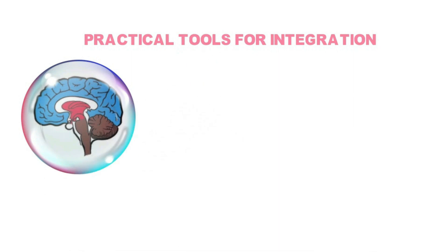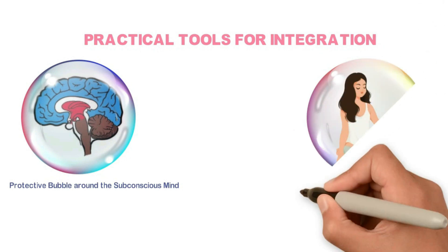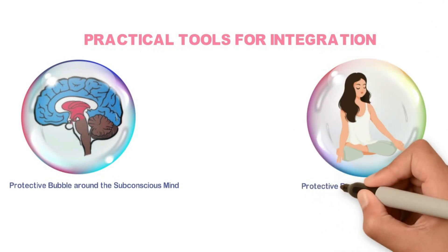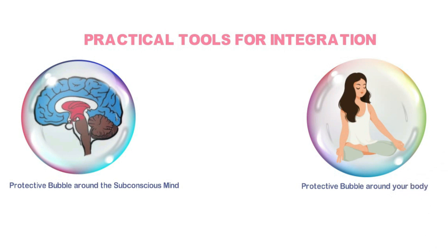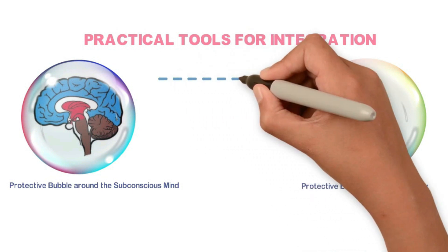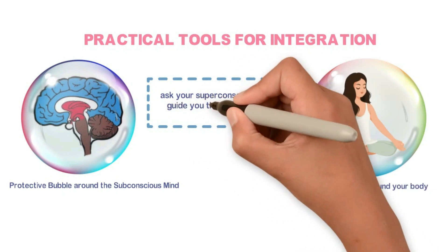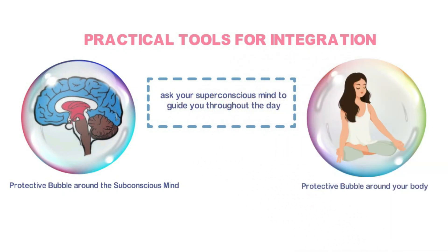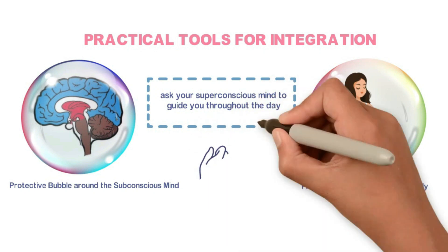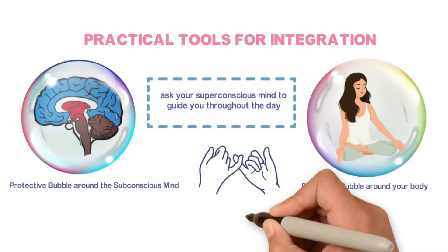So number one, when you wake up in the morning, as a suggestion, visualize a protective bubble first around your subconscious mind and then around your body. Next, you can ask your superconscious mind to guide you throughout the day, be it with your work, your family, or anything else you might want help with. Then throughout the day, keep the promises you make to yourself. This is how you will build trust in yourself. You will learn to apply personal power and over time, develop discipline.